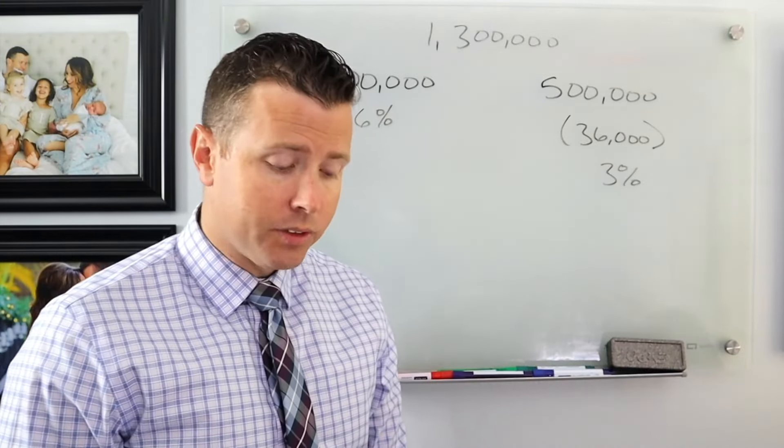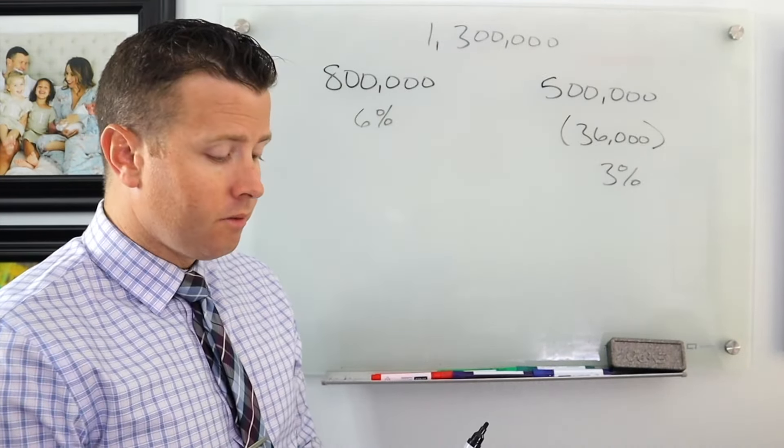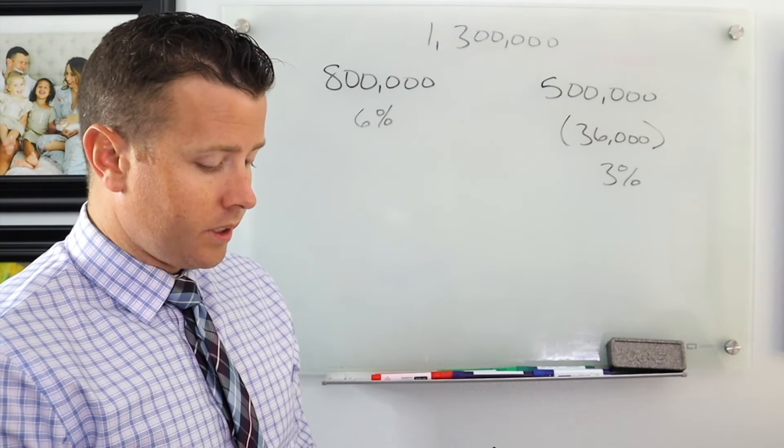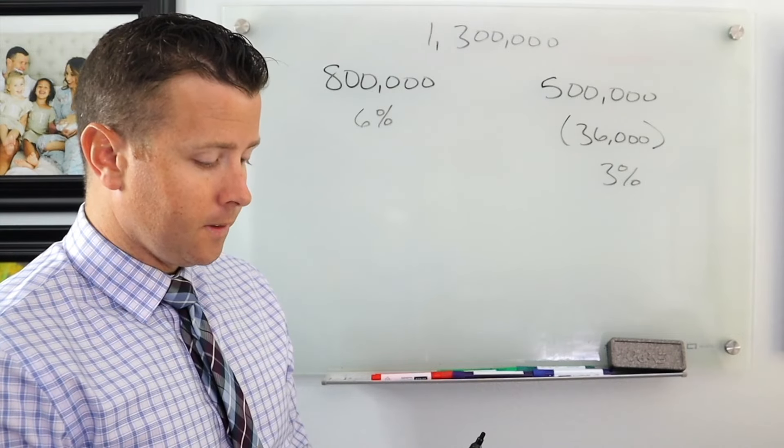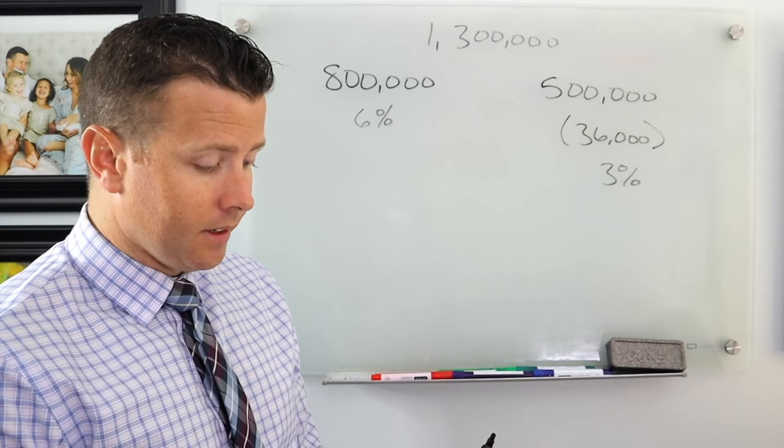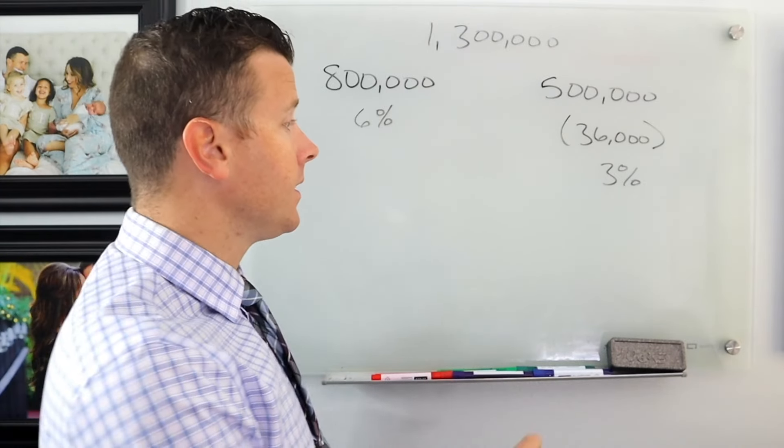$500,000, we're going to do 3% growth. We're going to take $36,000 a year. I want to see how long this is going to last. And I get 17.9 years.